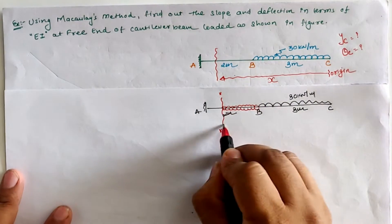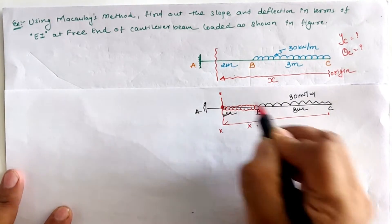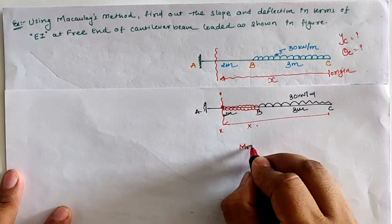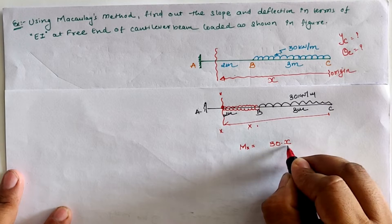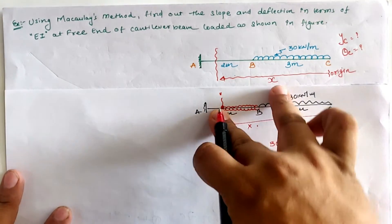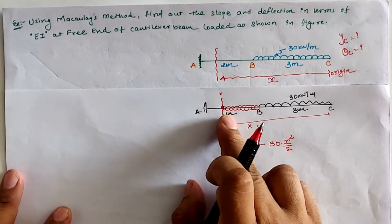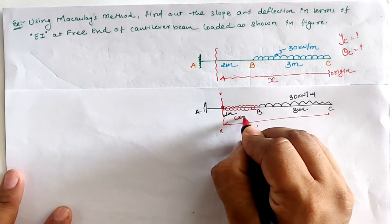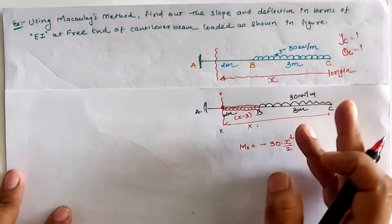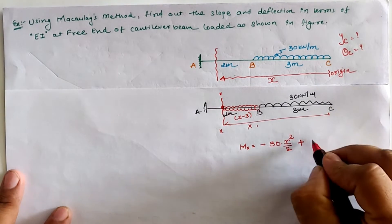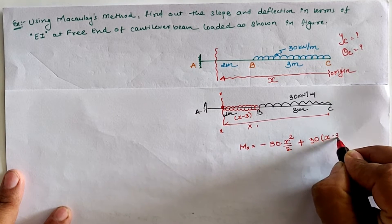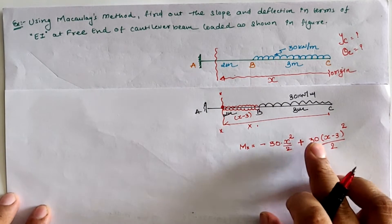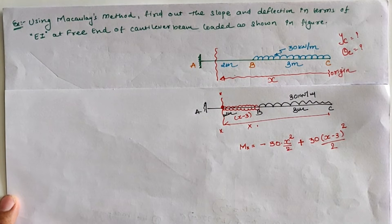For this section, taking moment at the location of the section: the moment due to the first UDL is 30 × x × (x/2) in the clockwise direction, giving 30x²/2. On the right-hand side, a clockwise moment is treated as negative. The remaining upward UDL spans (x − 3) meters, creating an anti-clockwise moment, treated as positive, giving +30/2 × (x − 3)². So the bending moment M = −30x²/2 + (30/2)(x − 3)².